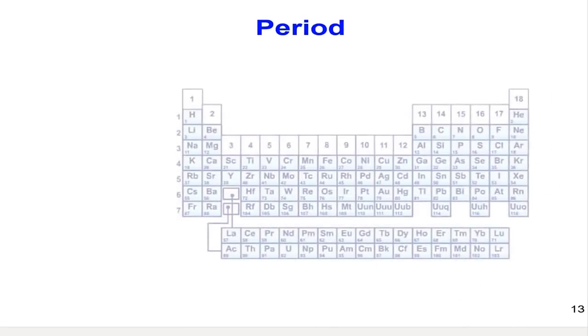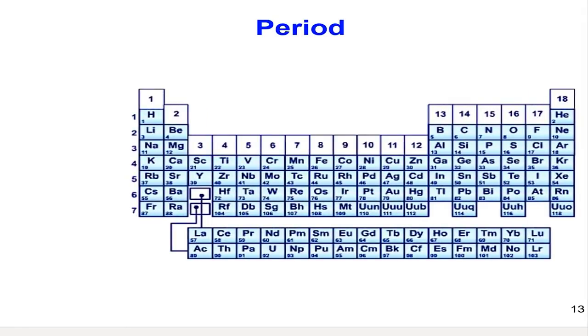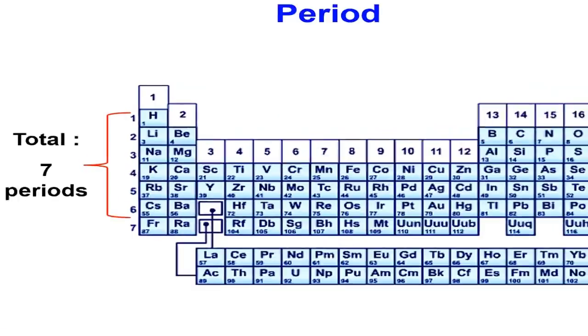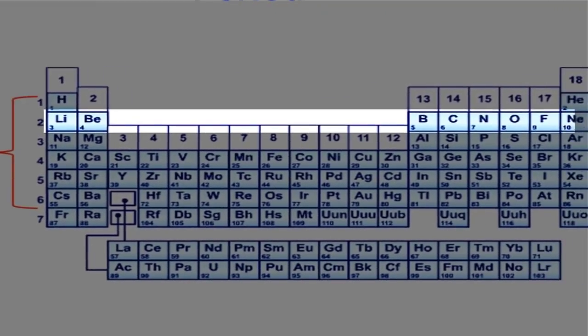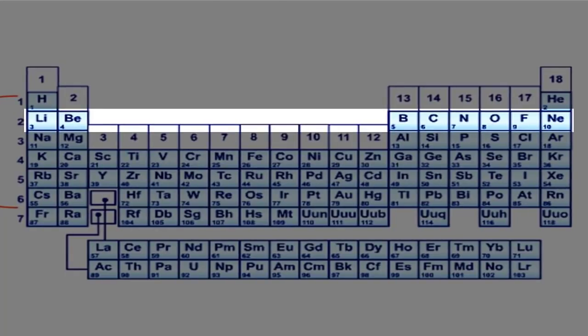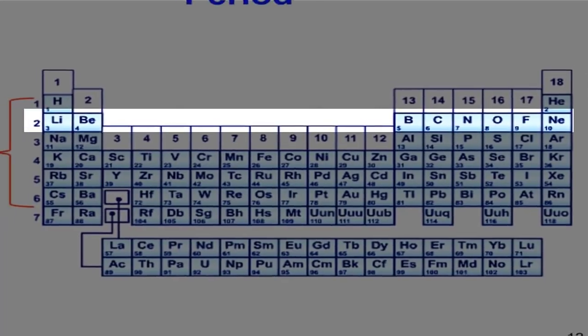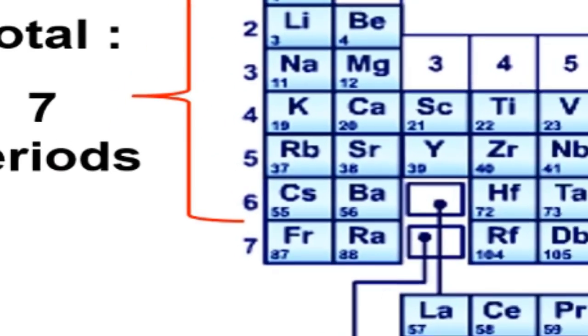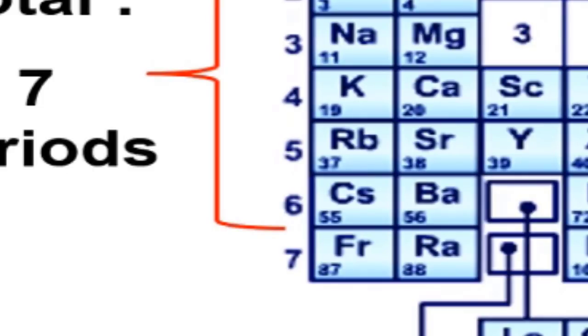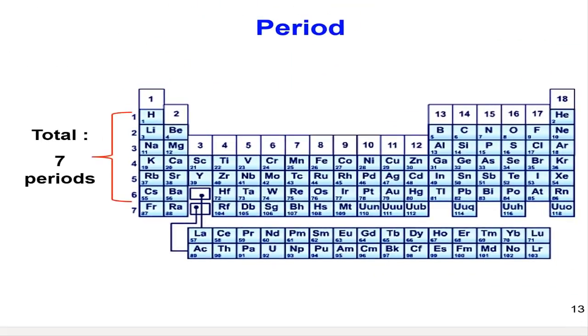This figure shows a clearer view of period in the periodic table. If I look at period 1, I have two elements which are hydrogen and helium. And in the second period, we have eight elements with lithium on the left and neon on the most right. I can continue numbering the period where this is period 3, period 4, period 5, period 6, and period 7. So the total periods in the periodic table are seven periods.